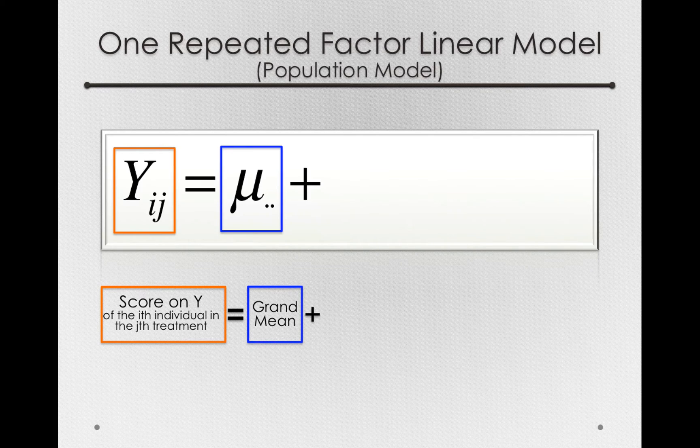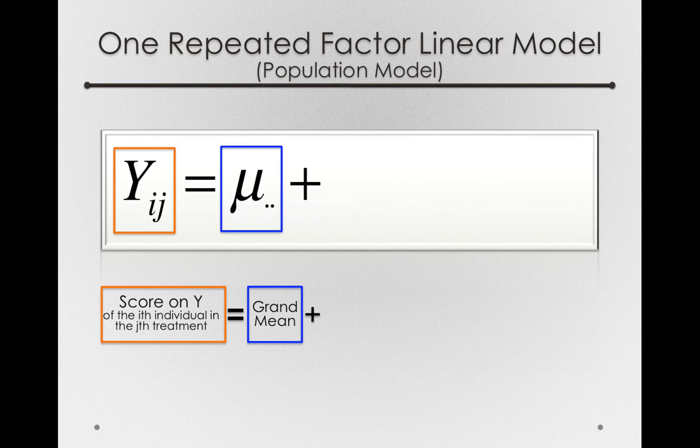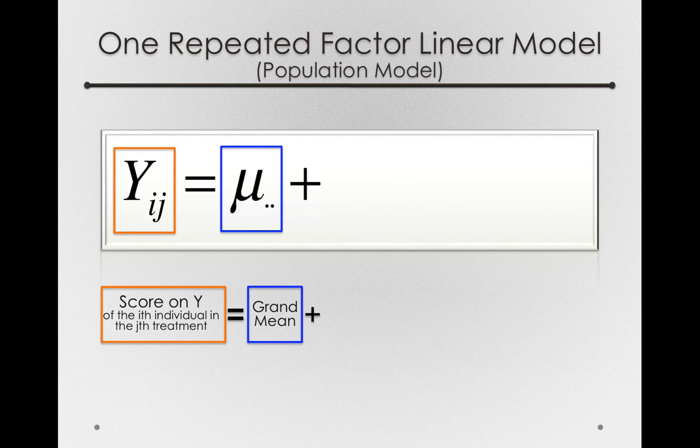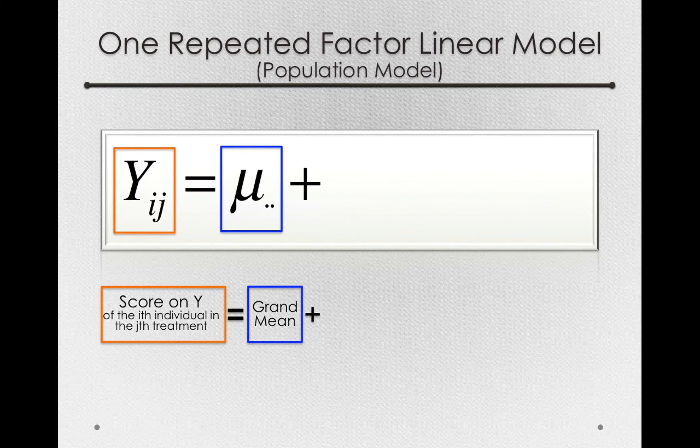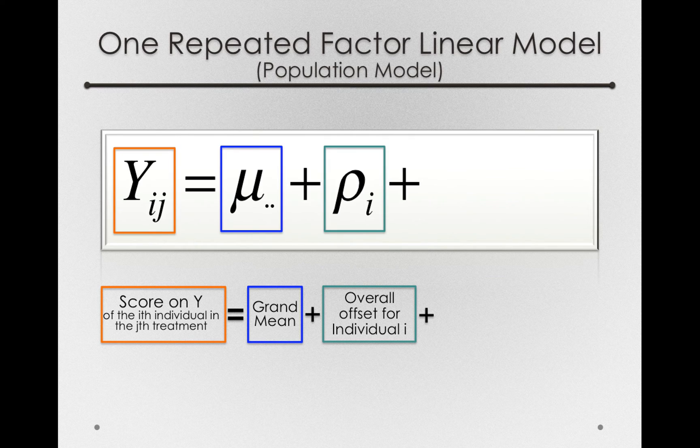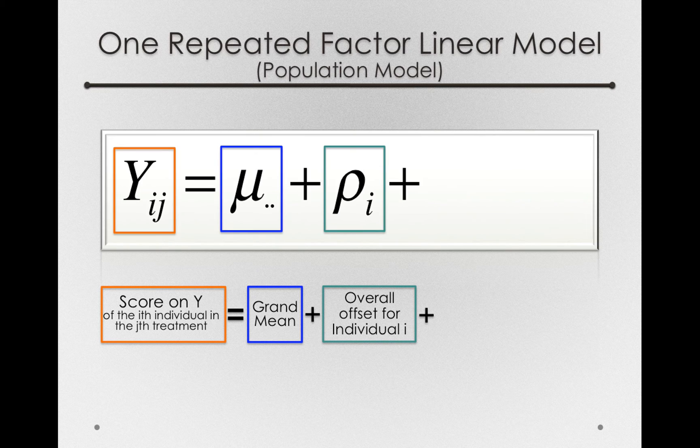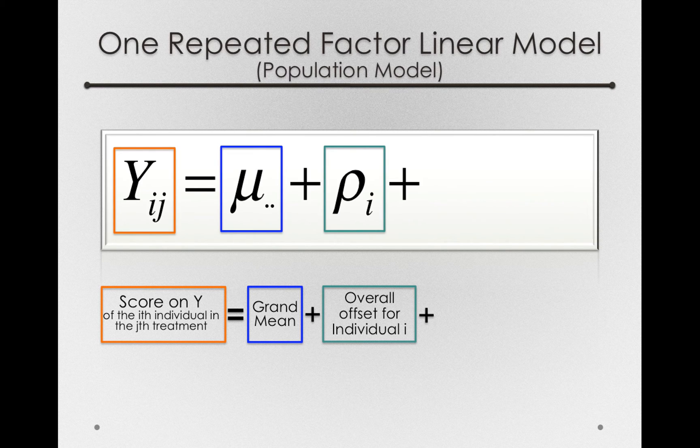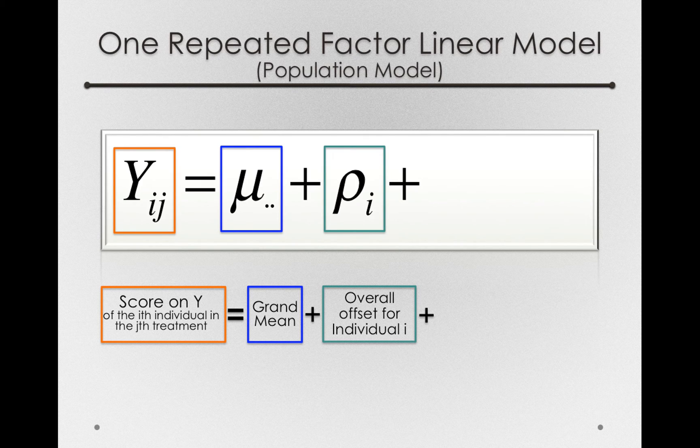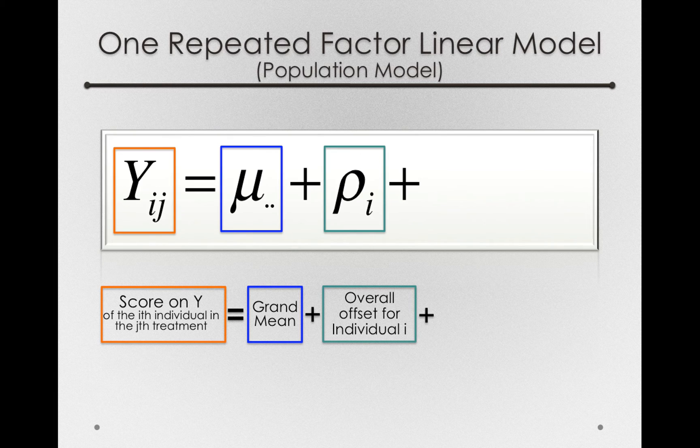Now, here's where things will change a little bit. Since we have subjects repeatedly measured, to understand or to facilitate the modeling, we're actually going to bring subjects into the model. That is, we're going to explicitly model a subject offset. Now, in our population model, this will be listed as the ρ_i's. So, that's the overall offset for individual i. Remember, offsets in general are just the degree to which one condition is different from the grand mean. In this case, the offsets associated with ρ will be the degree to which an individual's measurements, remember we have multiple of them, all differ from the grand mean. So, in essence, we're modeling the degree to which an individual is above or below average, on average.